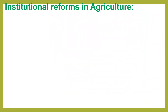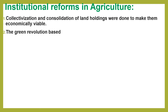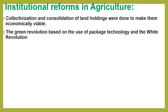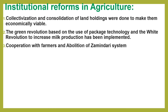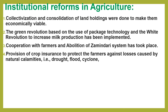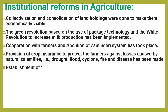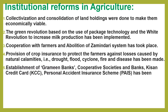The following are the institutional reforms done in India in agriculture. Collectivization and consolidation of land holdings were done to make them economically viable. The Green Revolution, based on the use of package technology, and the White Revolution to increase milk production have been implemented. Cooperation with farmers and abolition of the Zamindari system has taken place. Crop insurance has been provided to protect farmers against losses caused by natural calamities such as drought, flood, cyclone, fire and disease. Grameen banks, cooperative societies, Kisan credit cards and personal accident insurance schemes have been established.